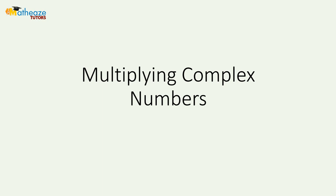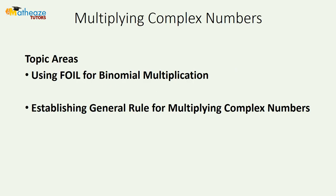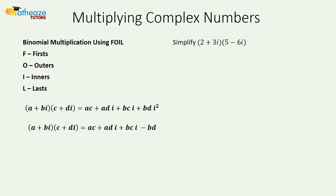Now let's examine how we multiply complex numbers. We're going to focus on using FOIL for binomial multiplication and establish a general rule for multiplying complex numbers. We'll start with using FOIL for binomial multiplication.